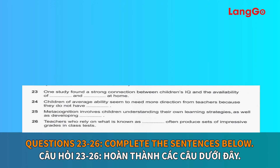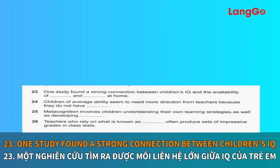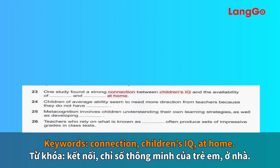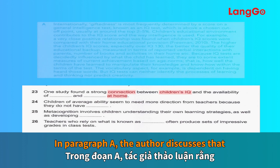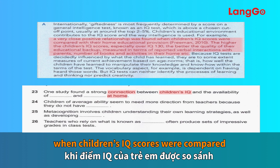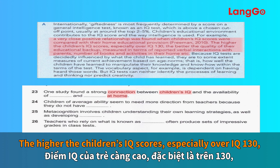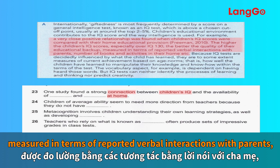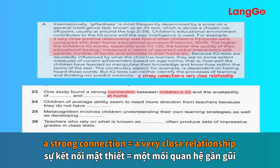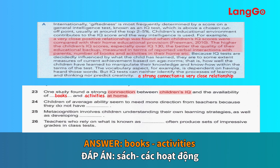For questions 23 to 26, we complete the missing word in the sentence. Number 23: one study found a strong connection between children's IQ and the availability of blank and blank at home. Keywords: connection, children's IQ, and at home. In paragraph A, the author discusses that a very close relationship was found when children's IQ scores were compared with their home educational provision — the better the quality of their educational backup, measured in terms of verbal interactions with parents, number of books and activities in their home. A strong connection means a very close relationship, so our answer is books and activities, respectively.